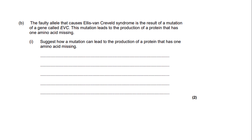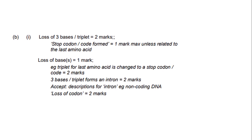The faulty allele that causes Ellis van Creveld syndrome is the result of a mutation of a gene called EVC. This mutation leads to the production of a protein that has one amino acid missing. The question asks: suggest how a mutation can lead to the production of a protein with one amino acid missing. Since three bases code for one amino acid, if one amino acid is missing, a triplet of bases must be missing — so I've suggested three bases are lost. The mark scheme says: loss of three bases or triplet scores two marks, which is exactly what we wrote.